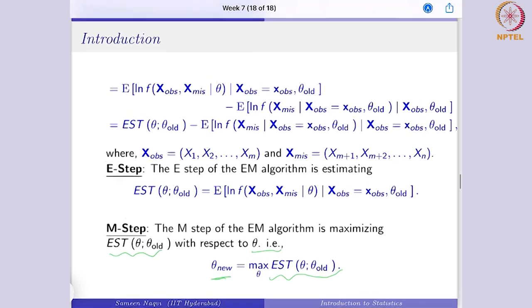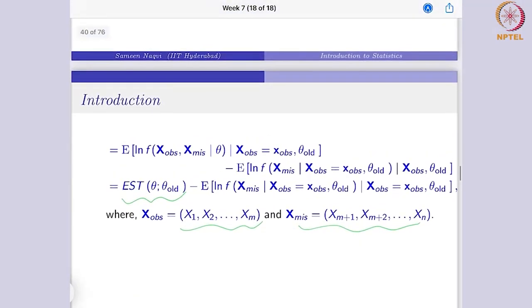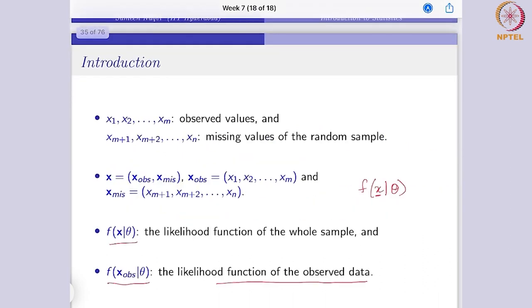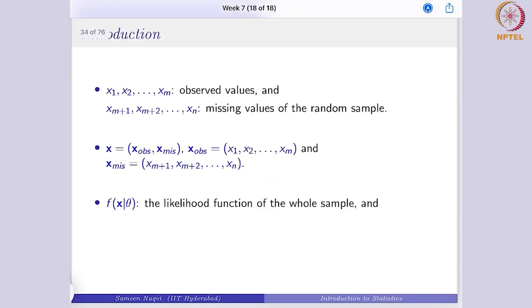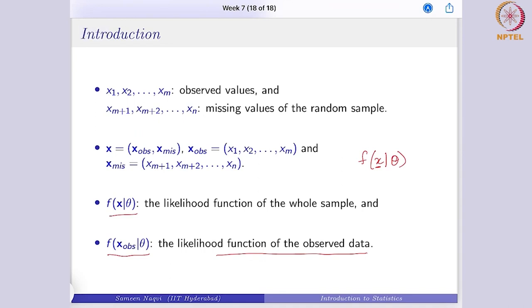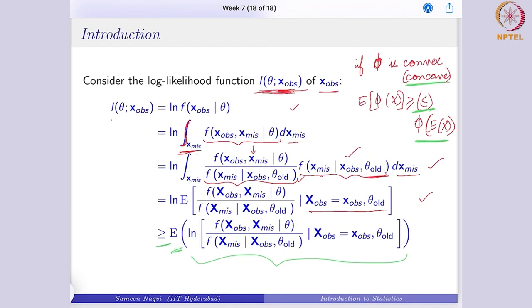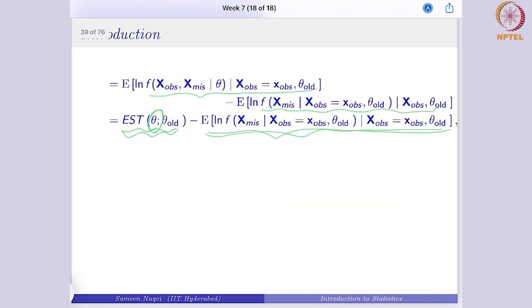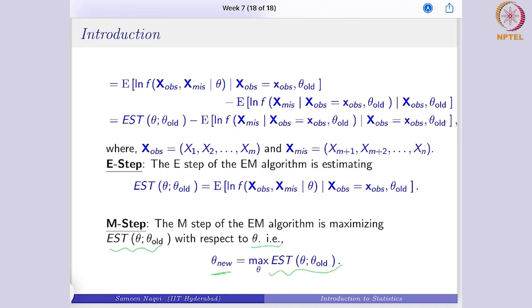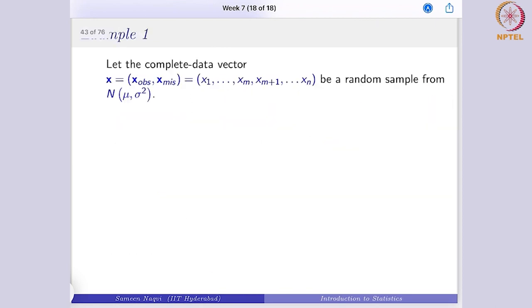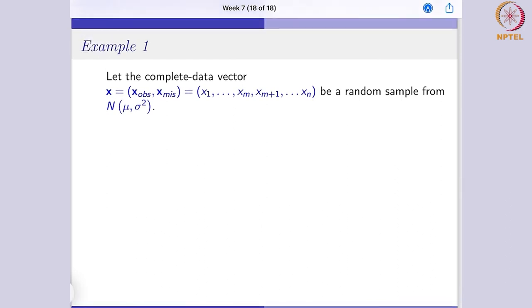Overall, we started with a dataset that had certain missing observations and certain observed values. We found the likelihood function for the given data and given theta, solved it step by step, and arrived at the E-step and the M-step — the two steps of the EM algorithm. In the M-step, we maximize the E-step result with respect to theta. Let us now consider certain examples to understand what is happening.